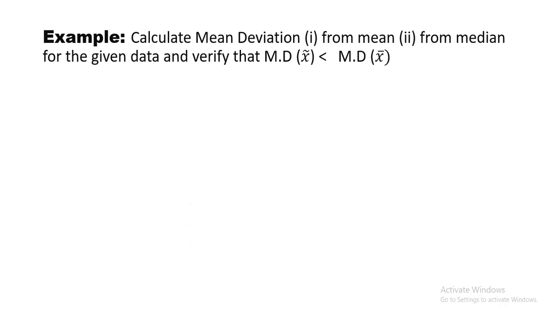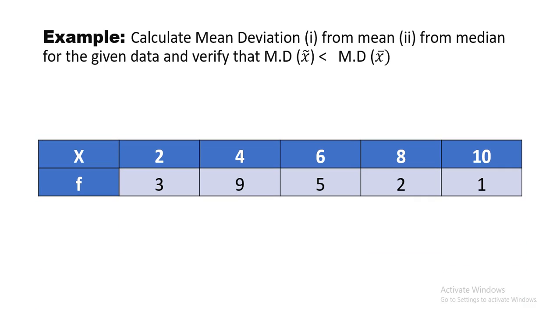In this part of the video we will be moving on towards Case 2: simple frequency distribution data for mean deviation about mean and median. The example is to calculate mean deviation from mean and from median for the given data, and verify that mean deviation about median is less than mean deviation about mean. Here is the data which is a simple frequency distribution — each observation has a corresponding frequency.